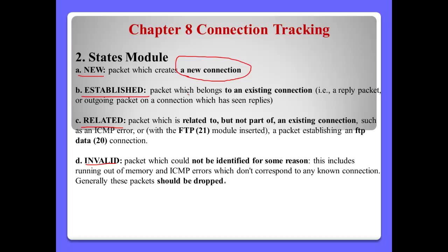'Established' means a packet which belongs to an existing connection — like a reply packet or outgoing packet on a connection which has seen a reply. So if this connection was already successful inbound, then it also needs to go outside using an outgoing packet. In this case, we use 'Established'. 'Related' means a packet related to but not part of an existing connection — such as an ICMP error or FTP.